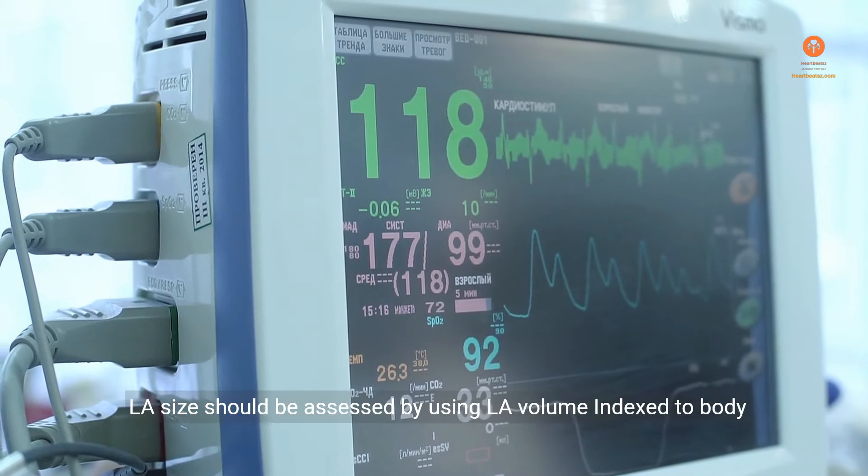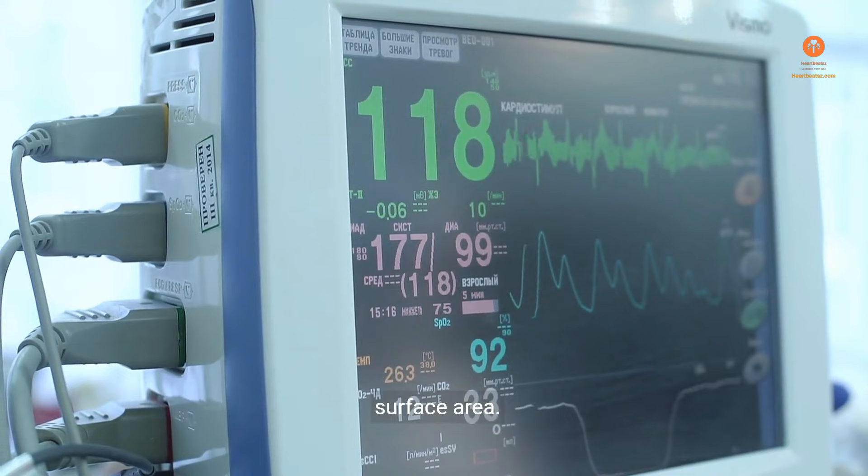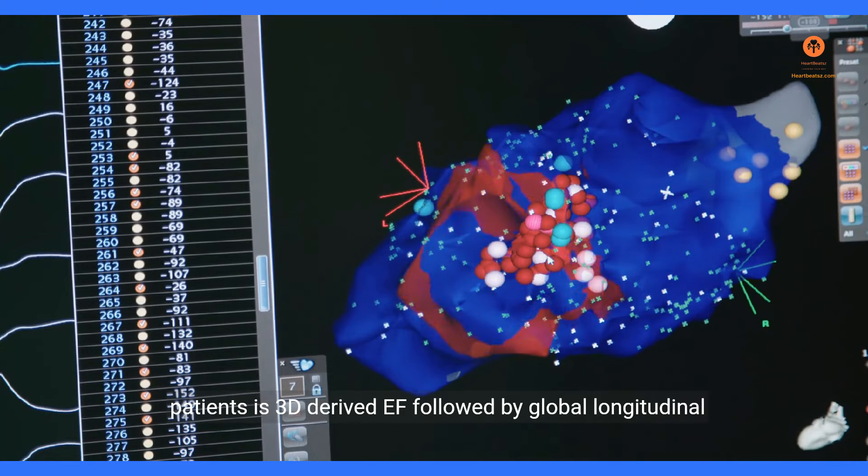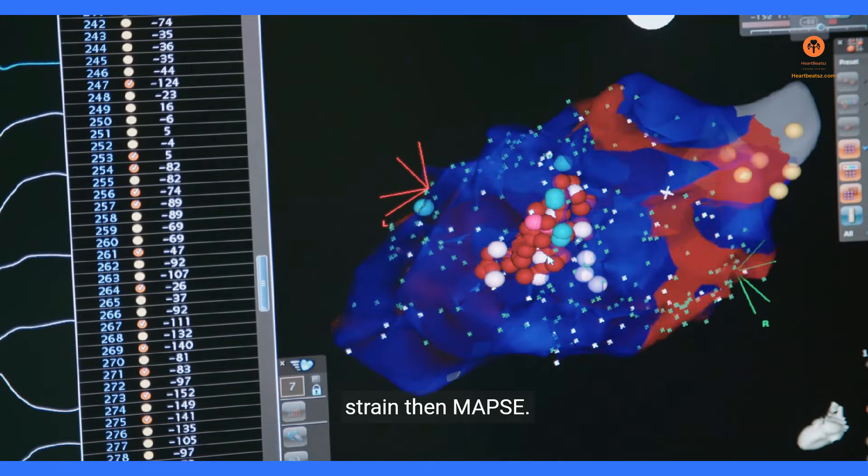LA size should be assessed by using LA volume indexed to body surface area. The recommended method for assessment of EF for chemotherapy patients is 3D-derived EF followed by global longitudinal strain, then MAPSI.